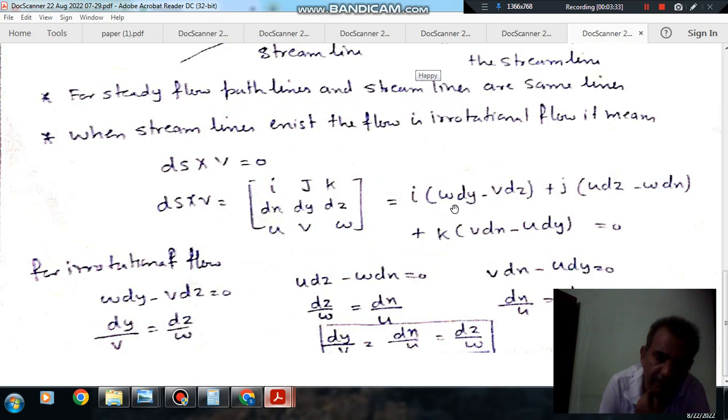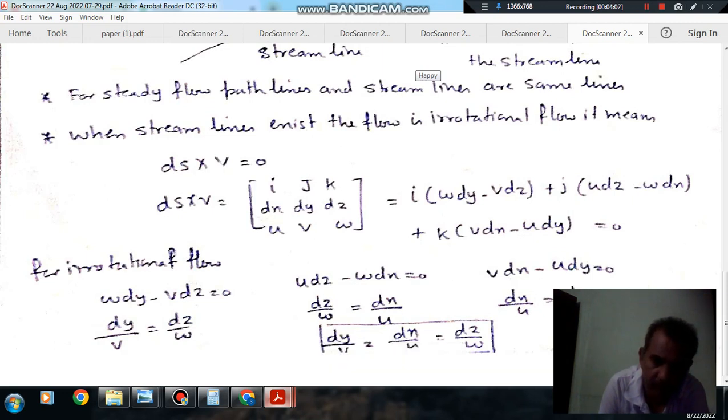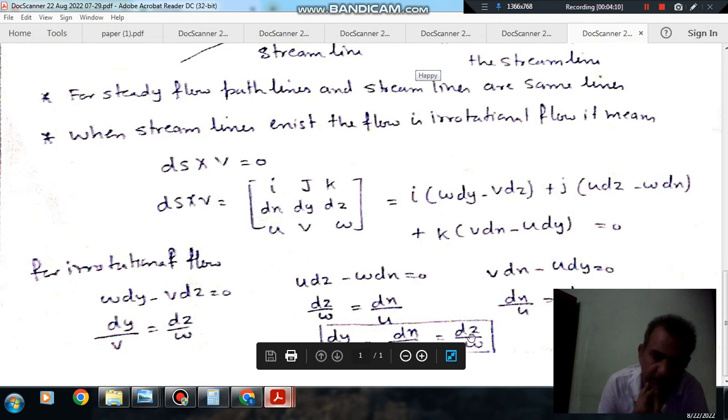Or we can say w·dy minus v·dz or dy/v or dz/w, or u·dz minus w·dx or dz/w is equal to dx/u should be equal to v·dx minus u·dy. dx/u should be equal to dy/v.